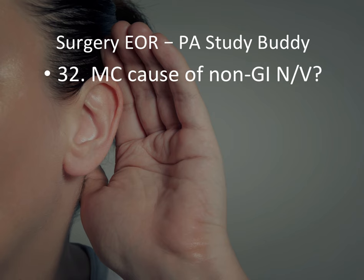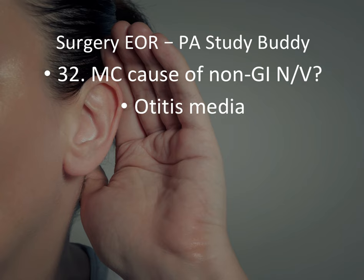What is the most common cause of non-GI nausea and vomiting? That would be otitis media. An infection in the ear can cause patients to have nausea and vomiting, and this is not associated with the GI system. If you know that otitis media causes nausea and vomiting and it is non-GI related, you won't be tricked by irrelevant diagnoses in the answer choices.